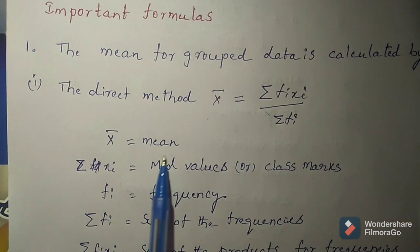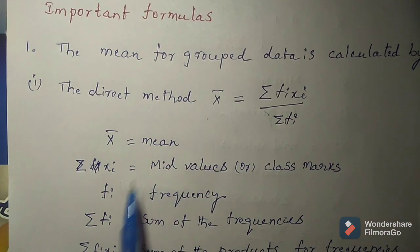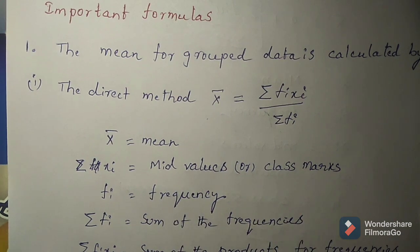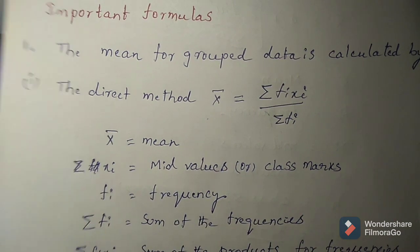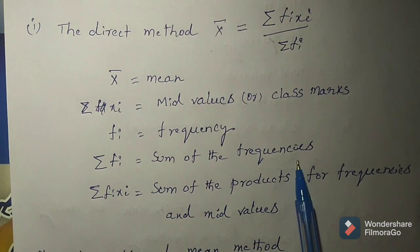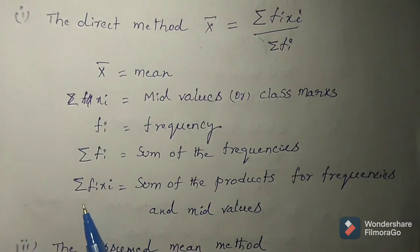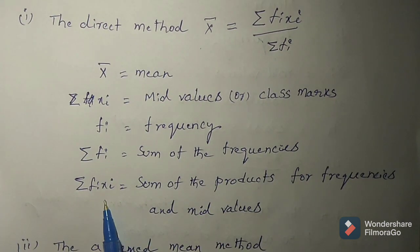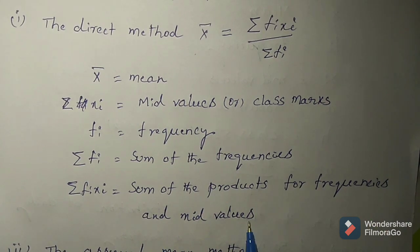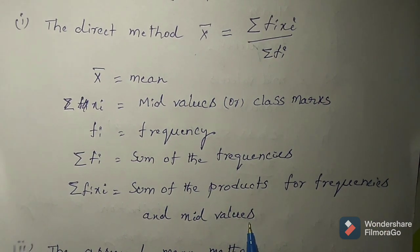x̄ means mean. xi means mid values or class marks. fi means frequency. sigma fi means sum of the frequencies. sigma fi xi means sum of the products of frequencies and mid values.